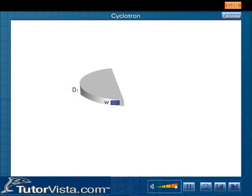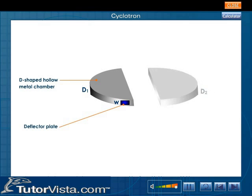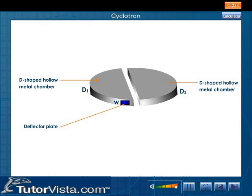A cyclotron consists of two hollow metal cylindrical chambers shaped like the letter D. Hence, these chambers are called the Ds. The Ds are separated slightly along their diameter and these Ds are enclosed in an evacuated chamber.